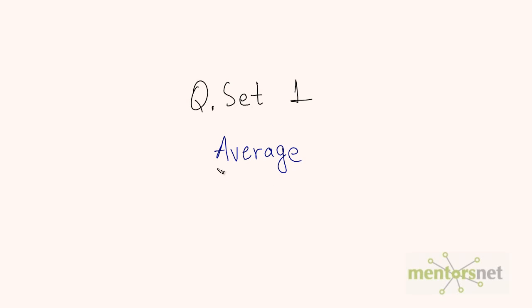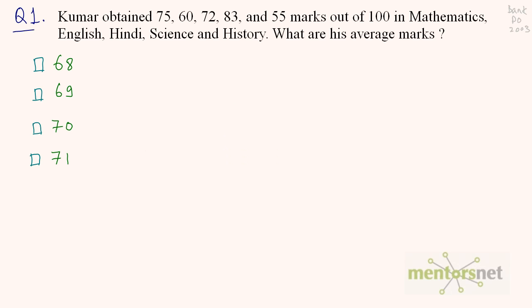Let us solve some questions on average in this question set. The first question: Kumar obtained 75, 60, 72, 83 and 55 marks out of 100 in Maths, English, Hindi, Science and History. What are his average marks?